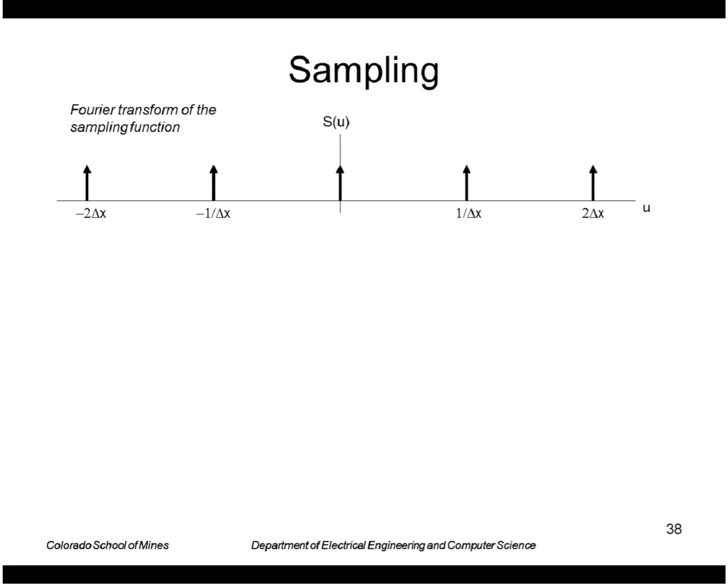Pictorially it looks like this. Here's my sampling function, its transform which is a series of impulses separated at 1 over delta x. Here's my transform of my original image.